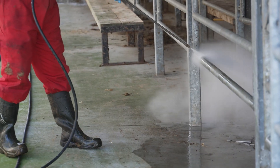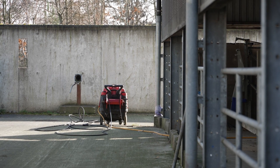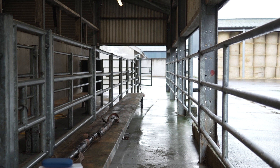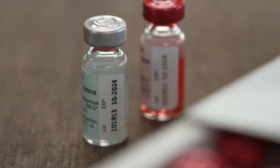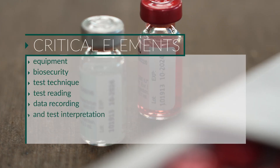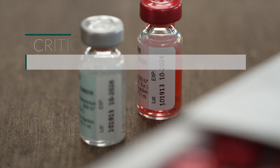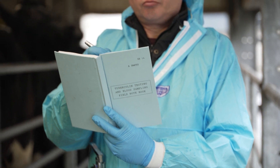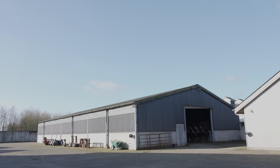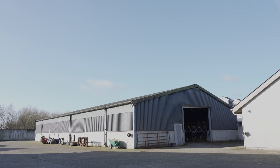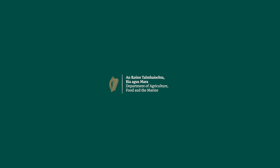This presentation by the Irish Department of Agriculture demonstrates the correct application of the single intradermal comparative tuberculin test. Critical elements addressed include equipment, biosecurity, test technique, test reading, data recording, and test interpretation. Meticulous attention to detail is essential in order to carry out the test in accordance with Irish and international requirements; deviation will produce inconsistent and inaccurate results. For further information or assistance, contact your Regional Veterinary Office or ERAD.